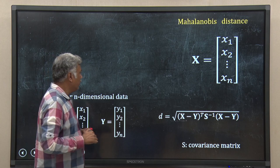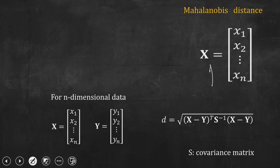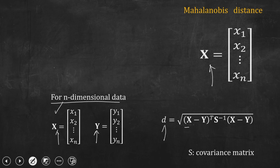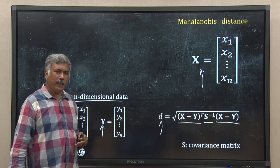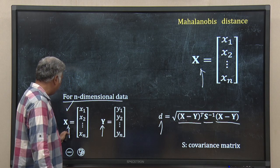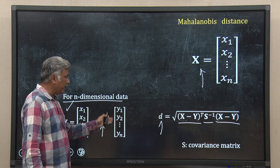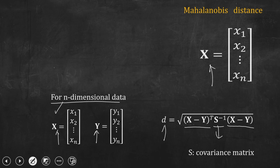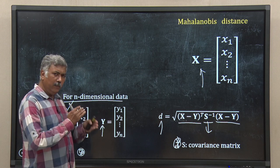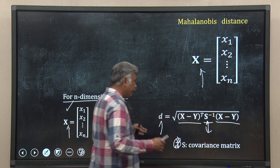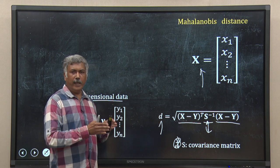How do we define Mahalanobis distance? For n-dimensional data vectors x and y, the Mahalanobis distance is defined as the square root of (x minus y) transpose, multiplied by the inverse of S, multiplied by (x minus y). Here, x minus y is the difference between the two data vectors, and S is the covariance matrix. We take the inverse of the covariance matrix and place it in the middle. That is Mahalanobis distance.